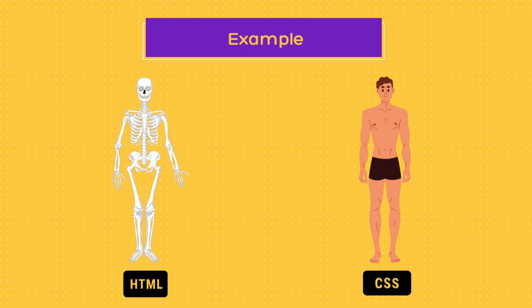Let us look at an analogy of the human body to better understand HTML and CSS. Just as the human skeleton serves as the foundational structure that supports and holds all the body's organs, HTML serves as the backbone of a web page, acting as a placeholder for all of its web elements. Meanwhile, CSS is similar to the features of the human body, such as skin, color, height, weight, and eye color, as it is primarily concerned with the presentation of HTML elements.